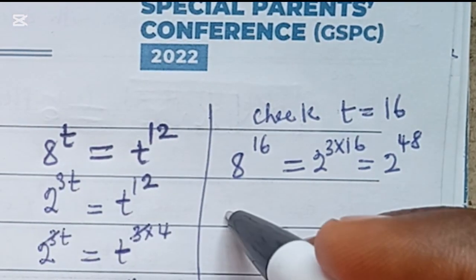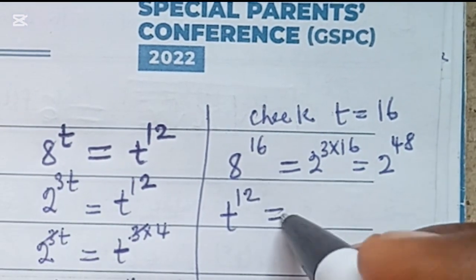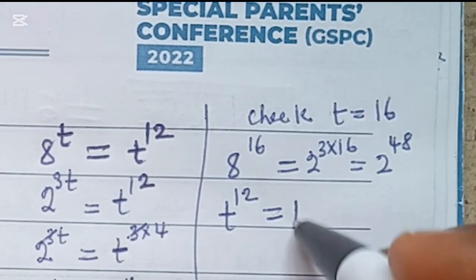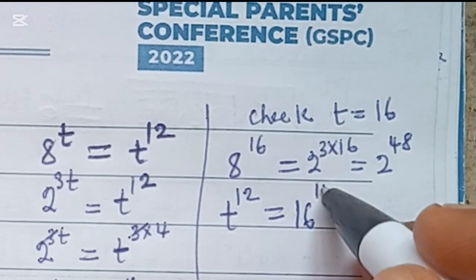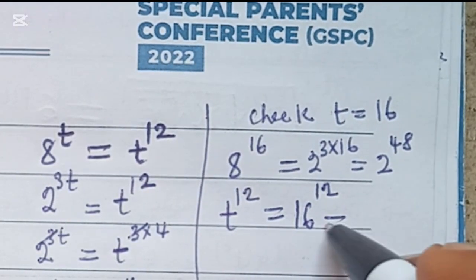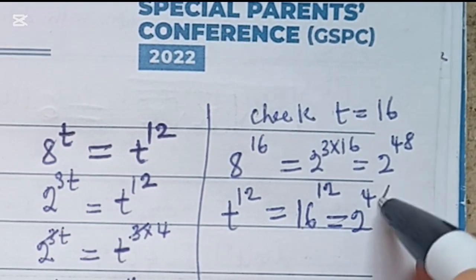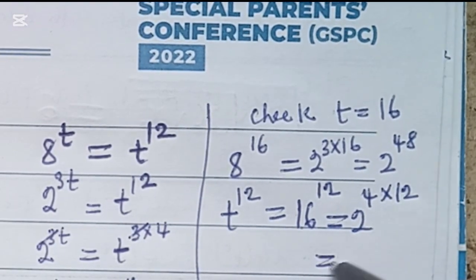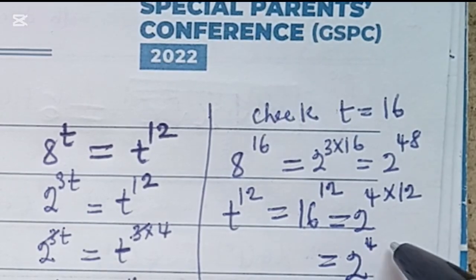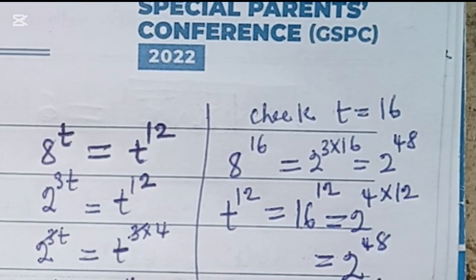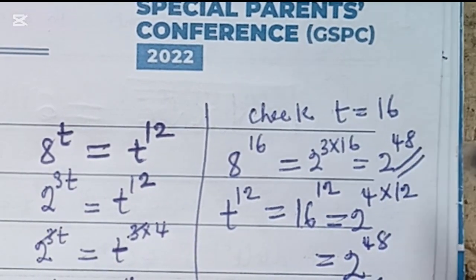So we've gotten the left-hand side, the right-hand side which is t to the power of 12, let's put in 16 there. We get 16 to the power of 12. Let's break this down. 16 is 2 to the power of 4, and then multiply it by 12. That gives us 2 to the power of 4 times 12 is 48. You see, 2 to the power of 48 is the same thing as 2 to the power of 48.